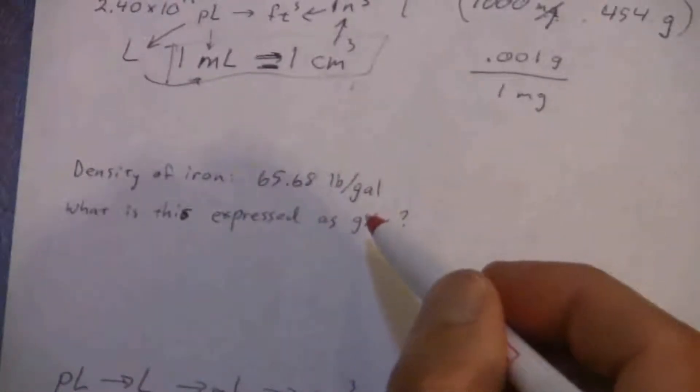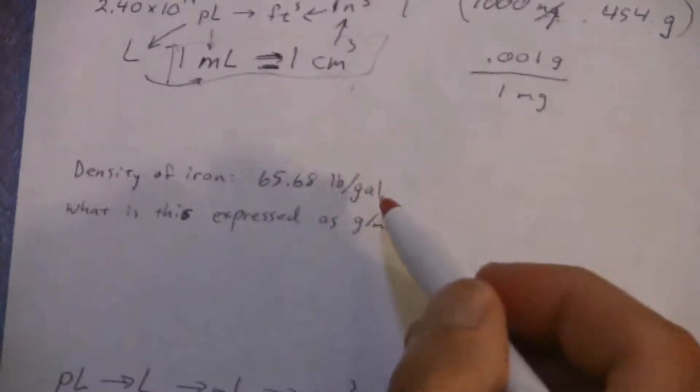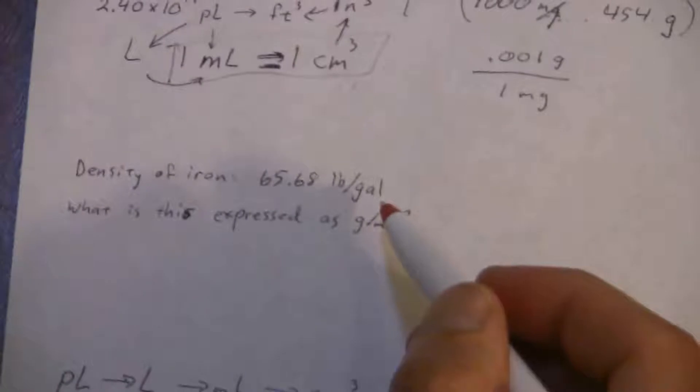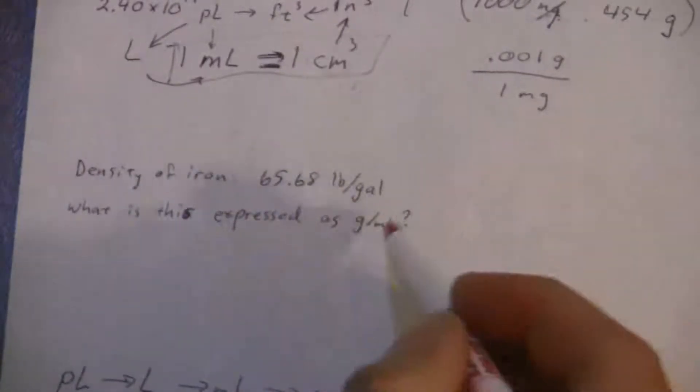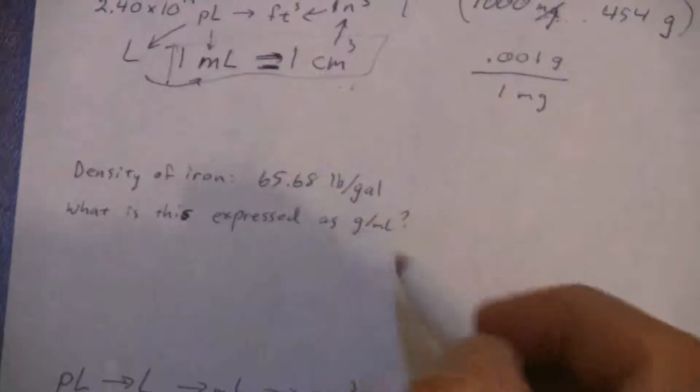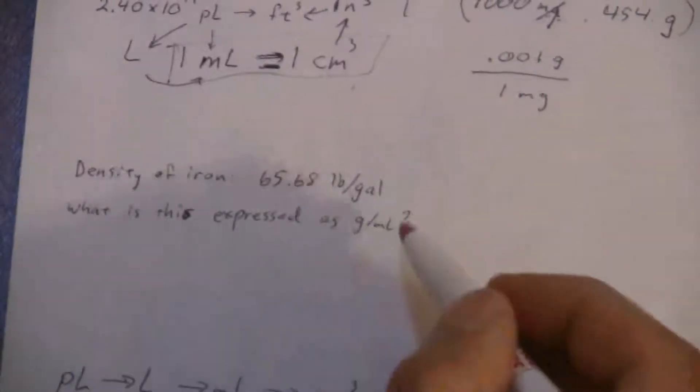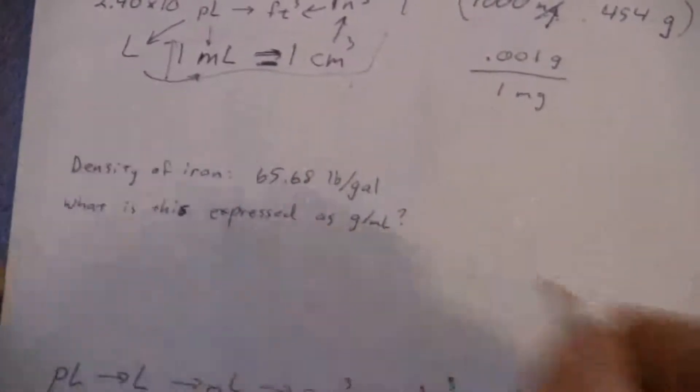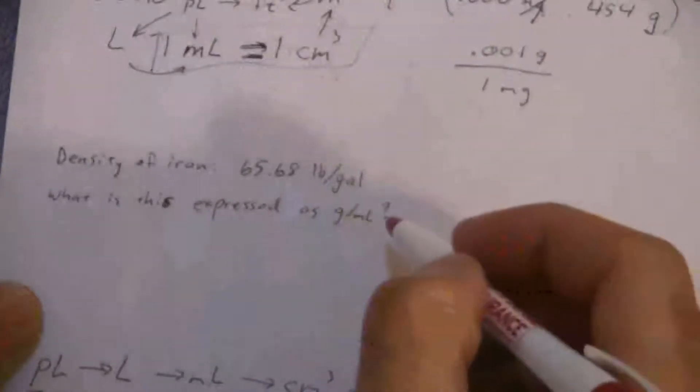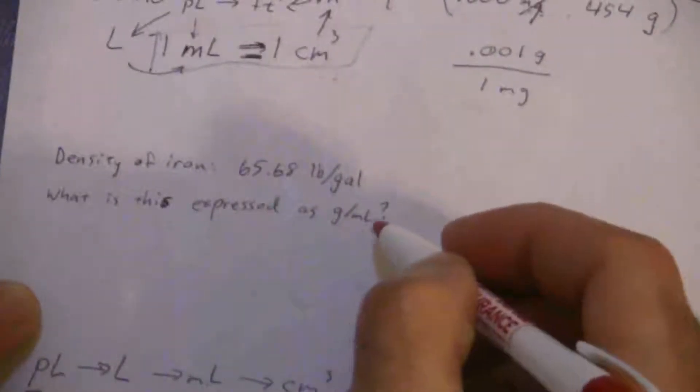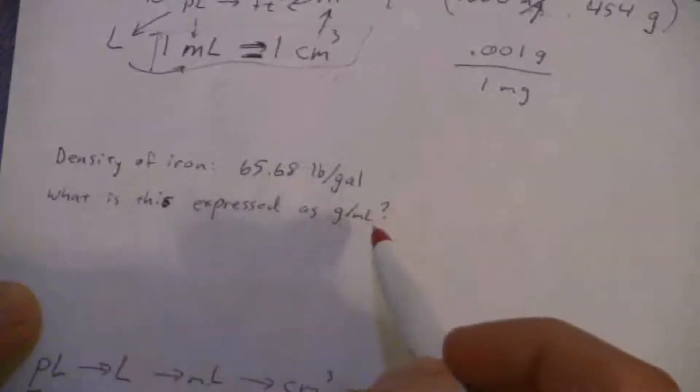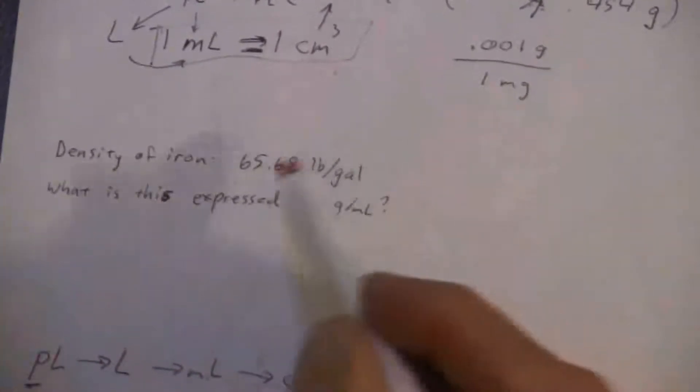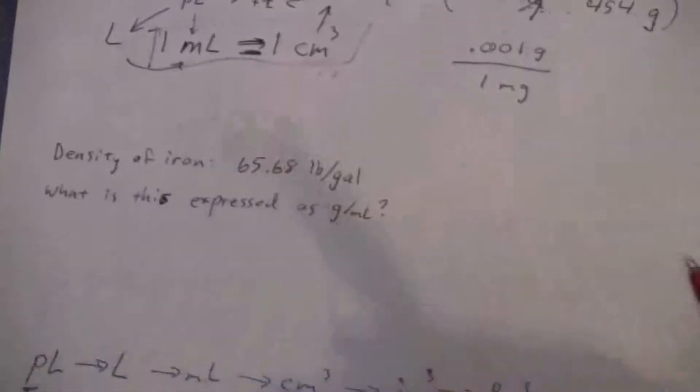But in the lab we're more familiar with grams per milliliter. So we're going to do a little calculation to convert the pounds per gallon to grams per milliliter. That's what it's asking - what is this expressed as grams per milliliter?